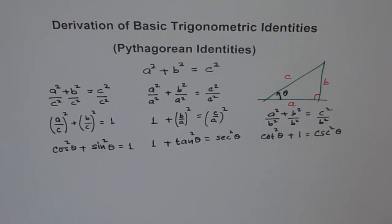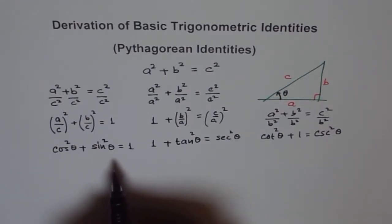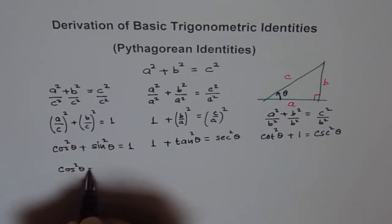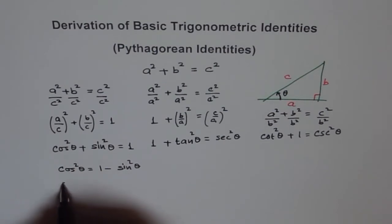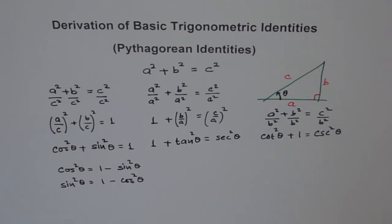So our identities are: cos squared theta plus sin squared theta equals 1; 1 plus tan squared theta equals secant squared theta; and cot squared theta plus 1 equals cosecant squared theta. These are the basic identities, and we can always use them in so many trigonometric problems. Now we can rearrange and write these identities in many different forms. For example, from the first identity we can write cos squared theta equals 1 minus sin squared theta, and similarly sin squared theta equals 1 minus cos squared theta.